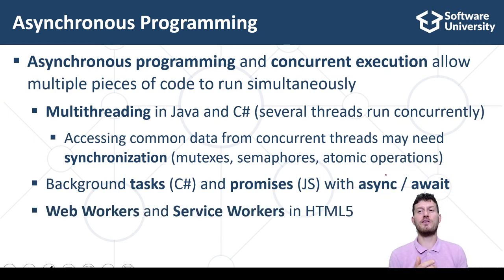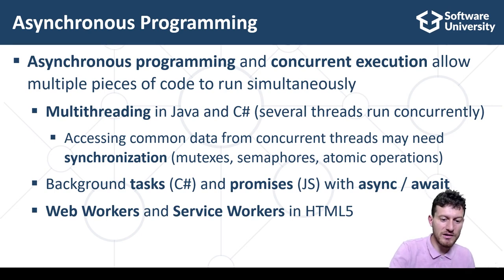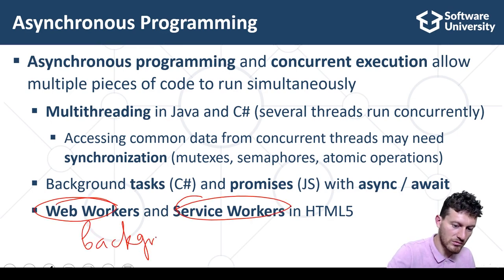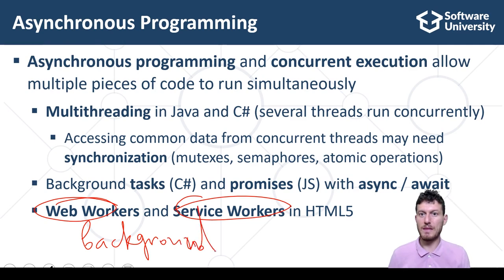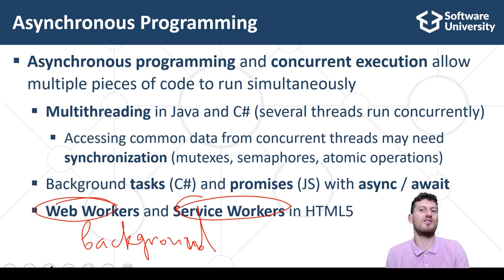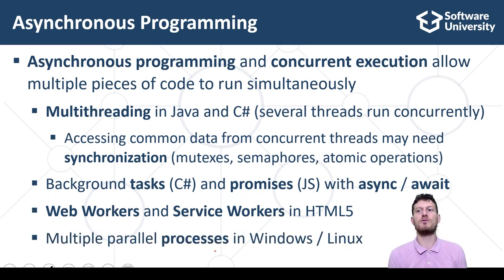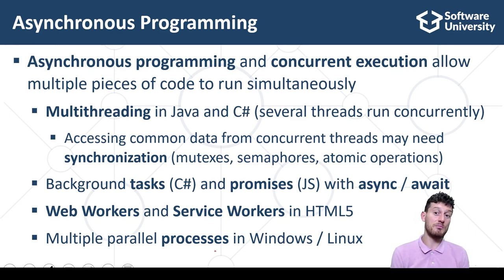Web workers and service workers in HTML5 are tasks — JavaScript code which runs in the background. Workers are like threads but they cannot access shared data, so synchronization is not needed. Workers communicate with the hosting website through messages. Running multiple parallel processes in Windows or Linux is another option to implement concurrent code execution, typical for low-level programming languages like C.